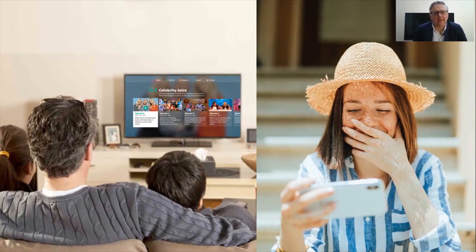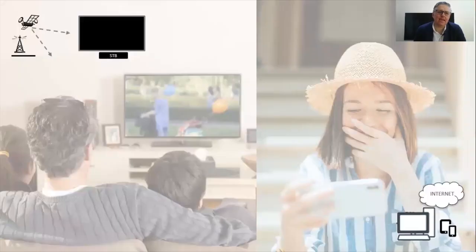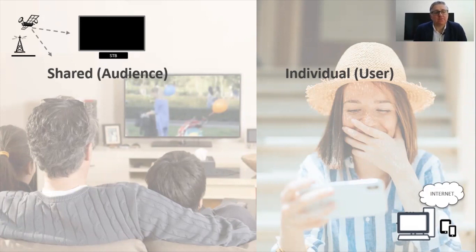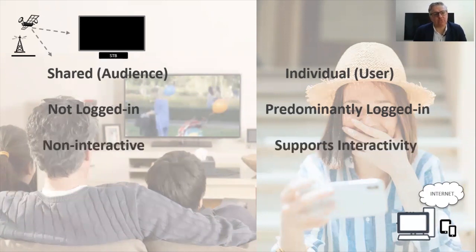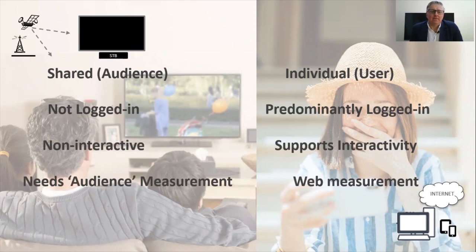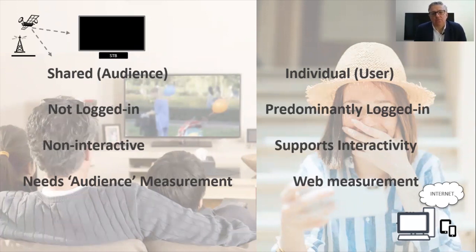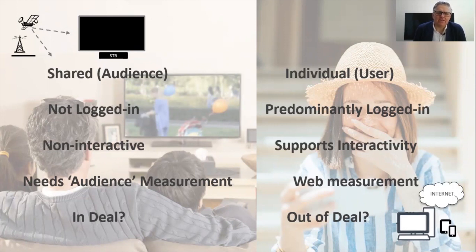If we look at audiences first of all on large screens in lounges, we're dealing with a shared audience — more than one person typically — whereas on devices like phones, tablets and laptops it's an individual. It is much more likely that we're not logged in on large screens, whereas we are predominantly logged in when we use small screens, and that has a huge knock-on implication in terms of data and targeting. It's almost impossible to run interactive formats on large shared screens, and only user devices like phones and tablets support new interactive formats.